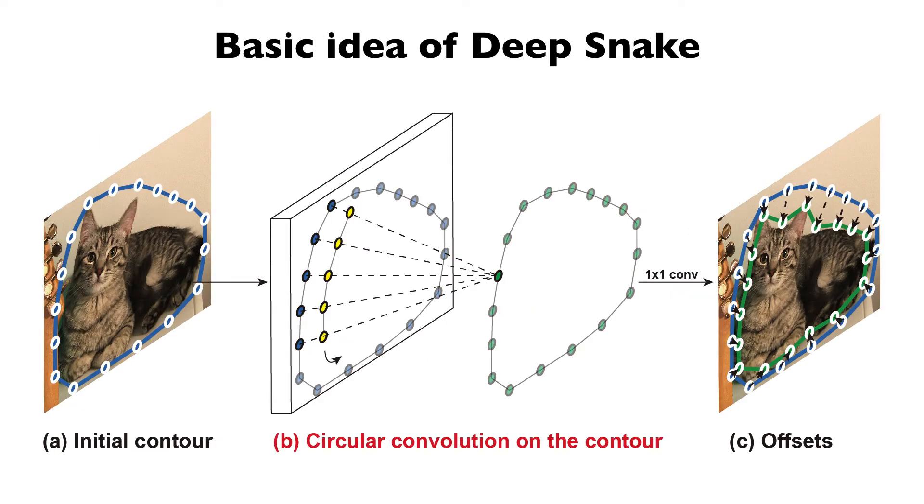Based on the learned feature, the network predicts offsets pointing to the object edge, which is used to deform the initial contour. Circular convolution is the core to learning expressive features for offset prediction.